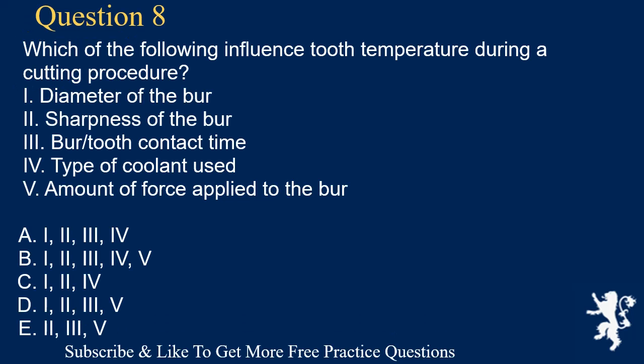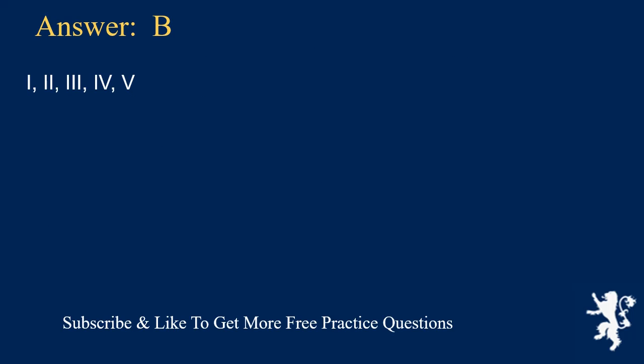Question 8. Which of the following influence tooth temperature during a cutting procedure? 1. Eye diameter of the burr, 2. Sharpness of the burr, 3. Burr-slash tooth contact time, 4. Type of coolant used, 5. Amount of force applied to the burr. A. 1,2,3,4; B. 1,2,3,4,5; C. 1,2,4; D. 1,2,3,5; E. 2,3,5. Answer: B. 1, 2, 3, 4, 5.